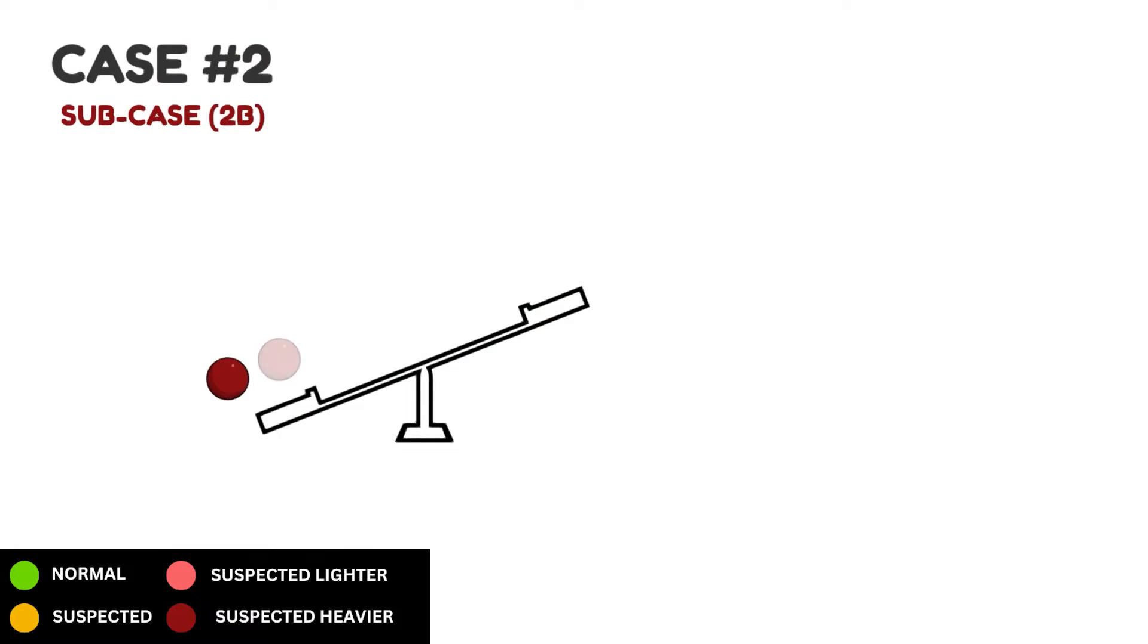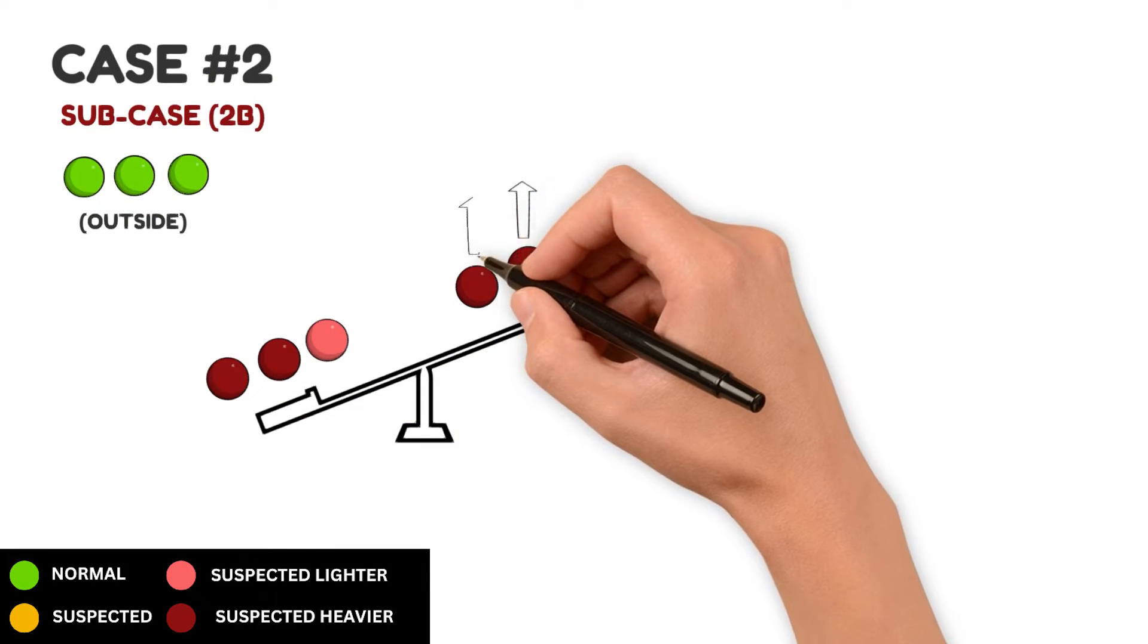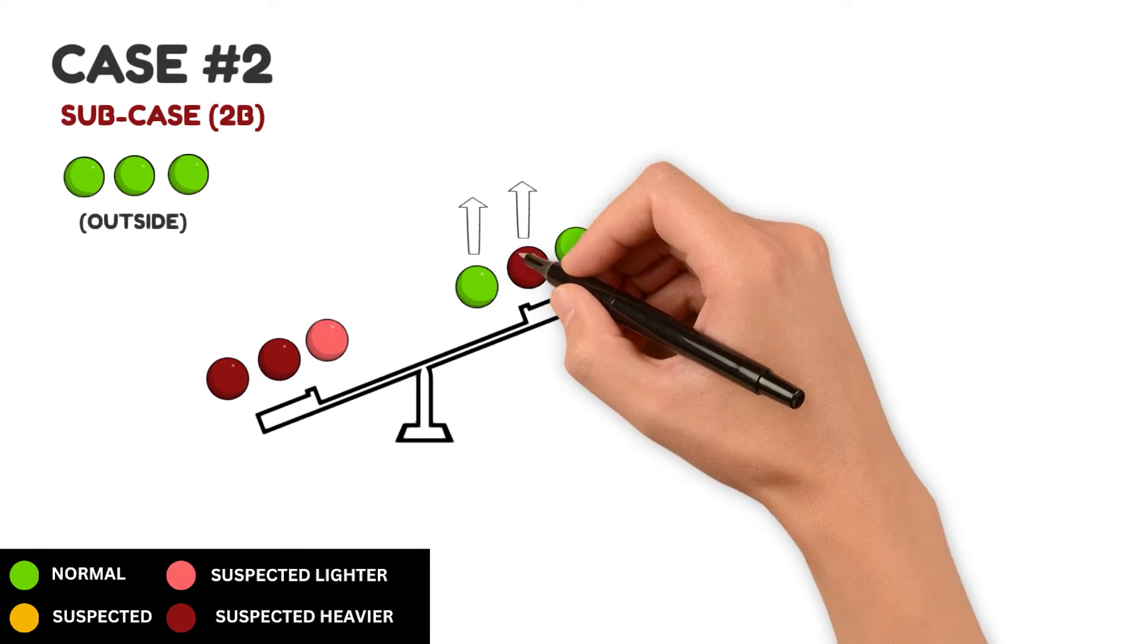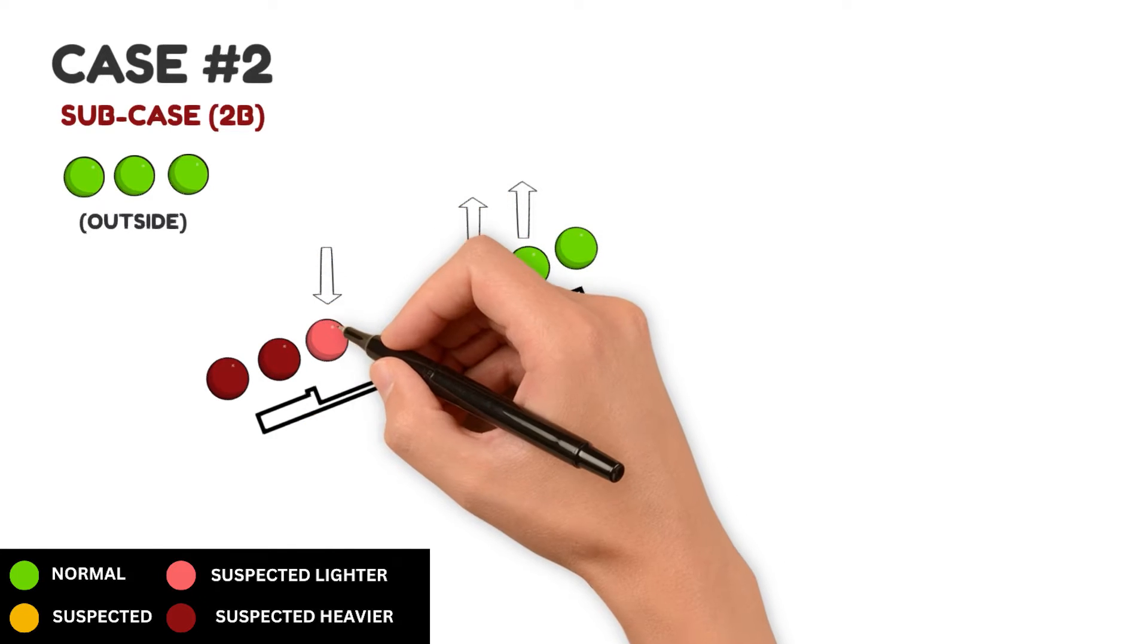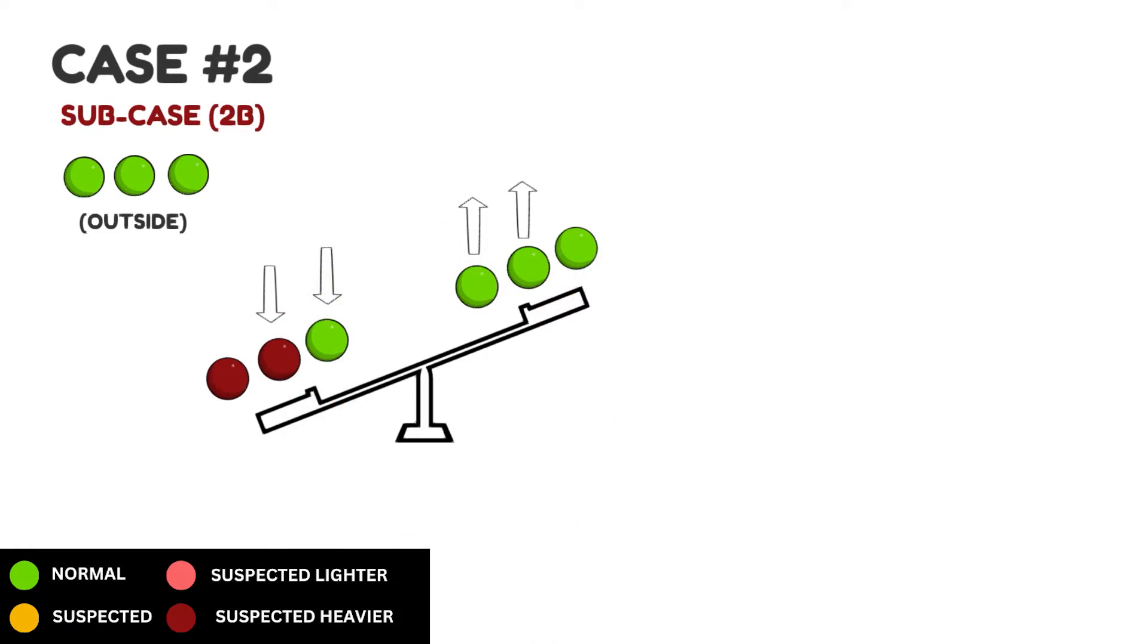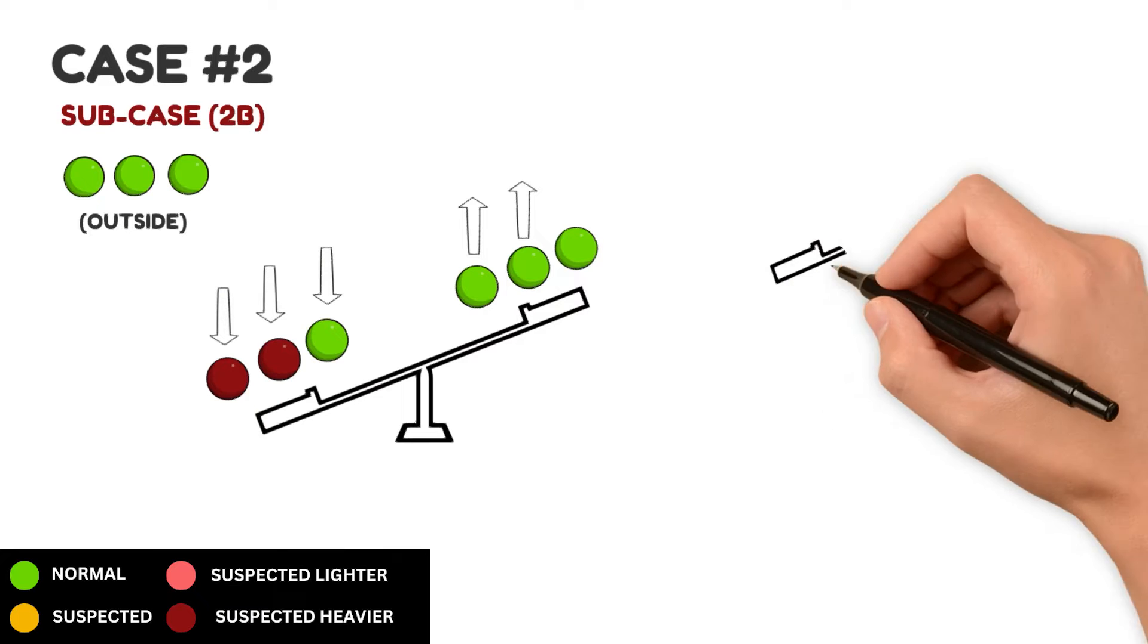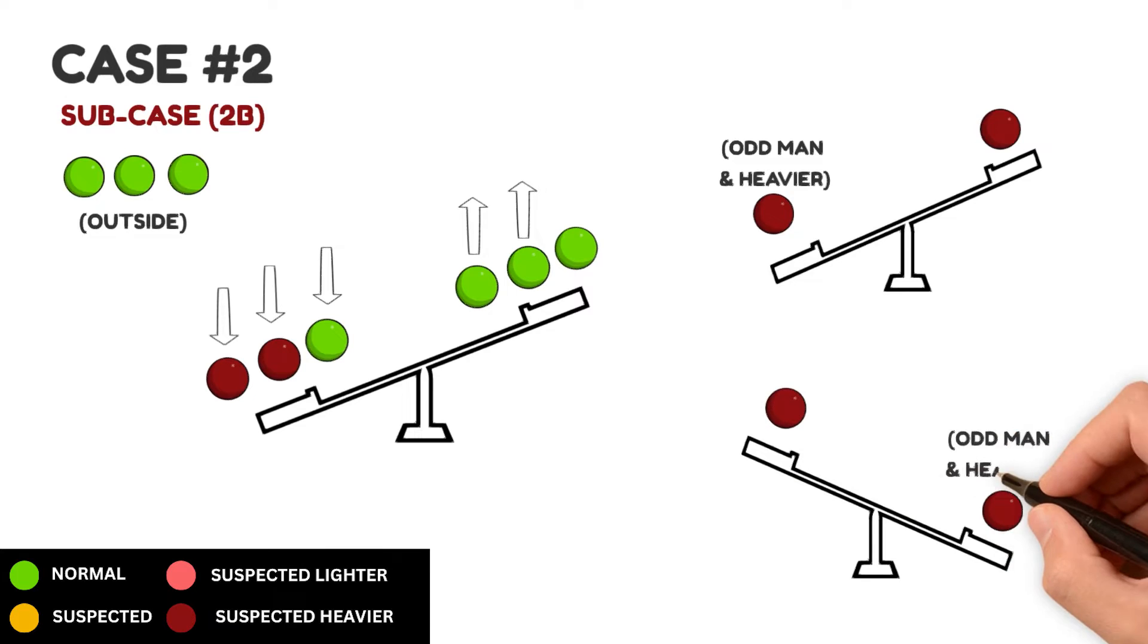Subcase 2B. Here, the left side goes down while the right side goes up. That tells us that outsiders are normal. Check out the right side. The heavier suspects are going upward, so none of them is the odd man. They're all of normal weight. Similarly, on the left side, a lighter suspect is going down, confirming it's not the odd man but also of normal weight. Plus, we've got 2 heavier suspects on the left that go down. So they're still the heavier suspects. The final weighing will reveal which of these 2 heavier suspects is actually the odd man.